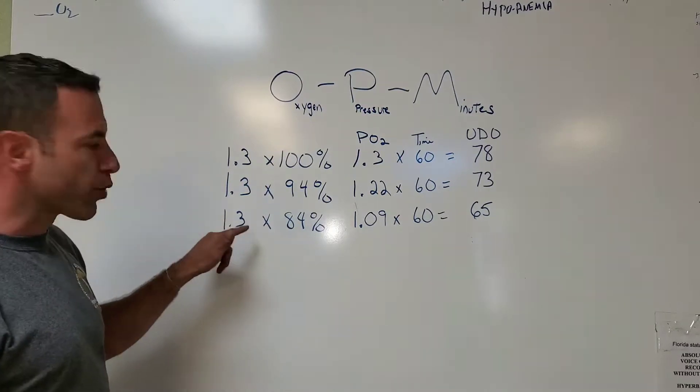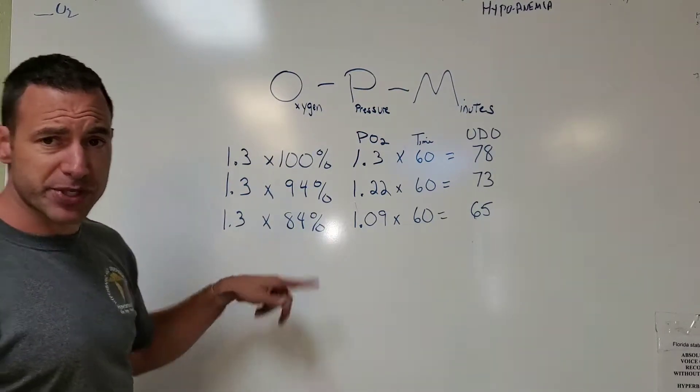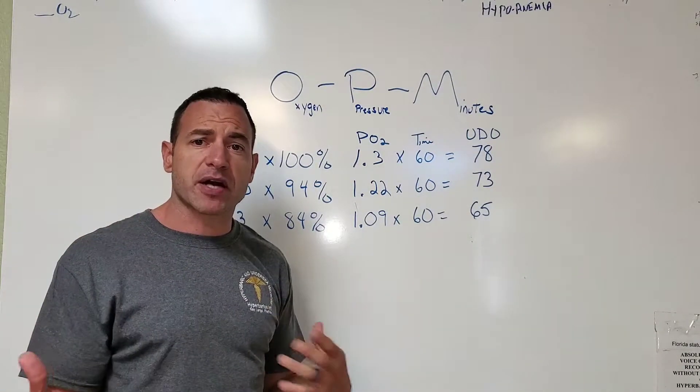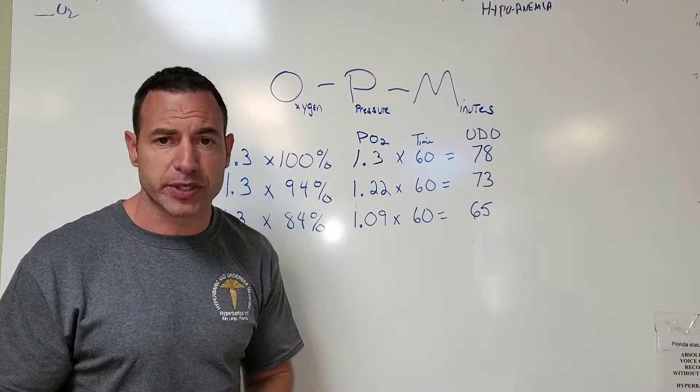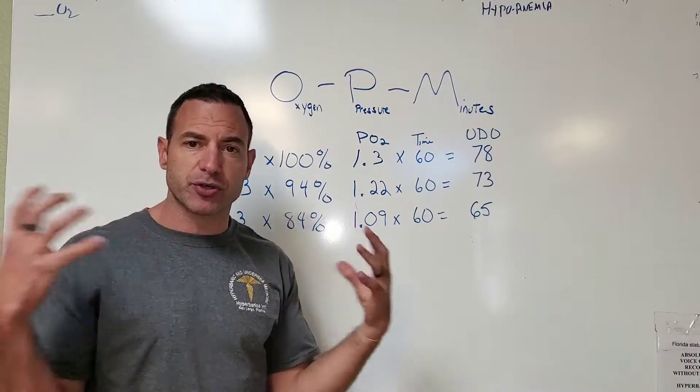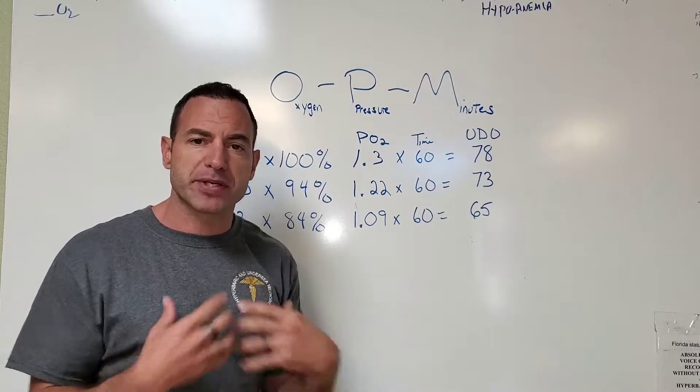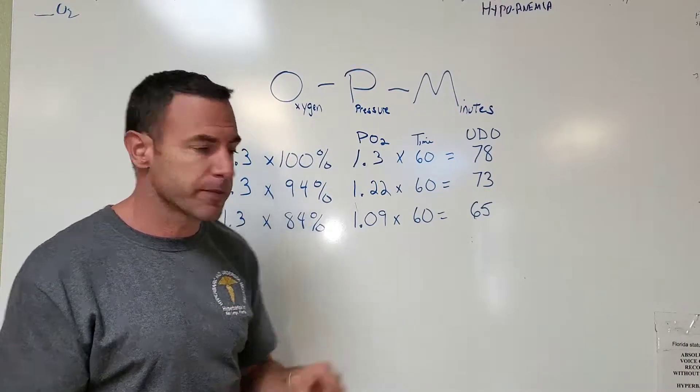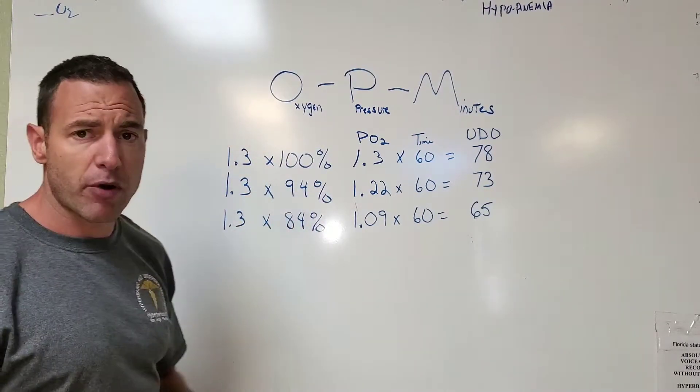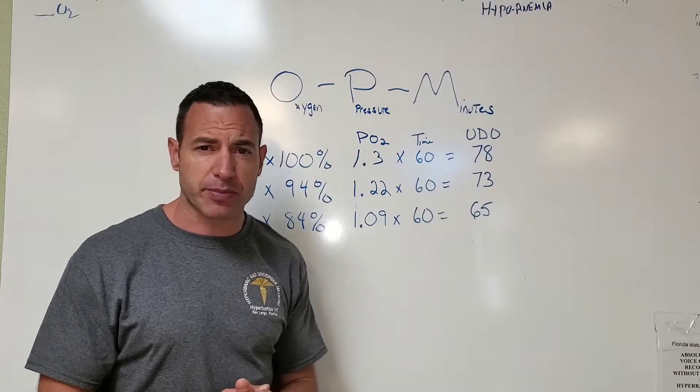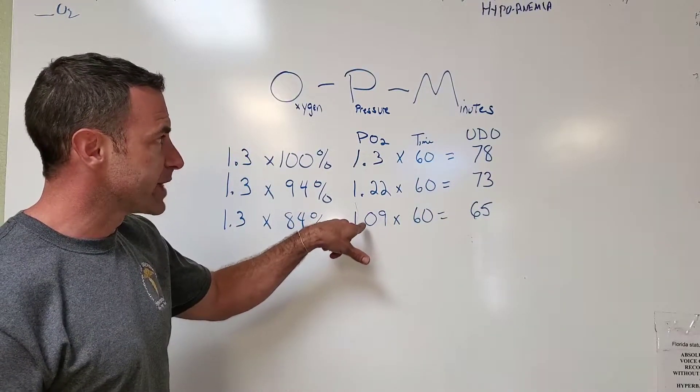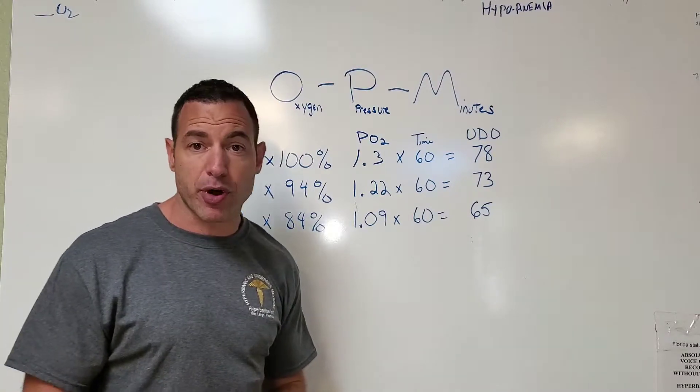And then we have another example: 1.3 times 84%. Let's say you're using an oxygen concentrator and the mask is leaking—it doesn't have a good seal—so you're getting some ambient air mixed with the oxygen. You can come up with around 84% oxygen uptake, and in that case the PO2 will come down to 1.09.